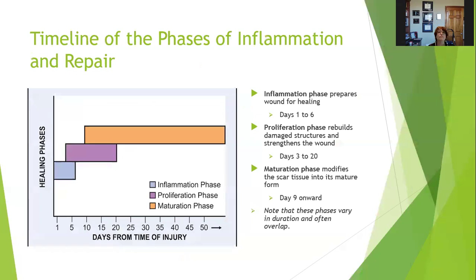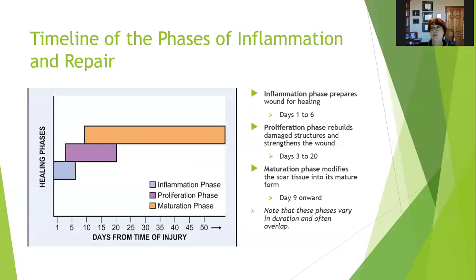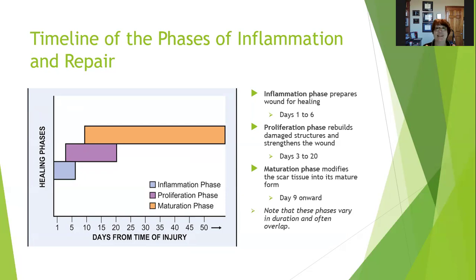The timeline of the phases of inflammation and repair — obviously these phases vary in duration from person to person, and they often overlap. It's not like today the inflammation phase stops and the proliferation phase begins; it doesn't work that way. They overlap. The inflammation phase prepares the wound for healing, and it usually lasts from one to six days.